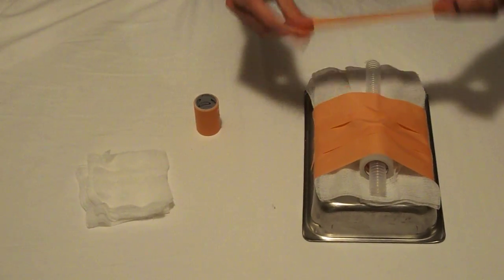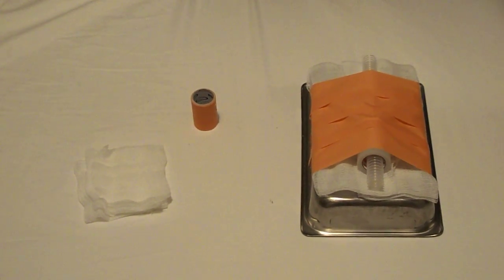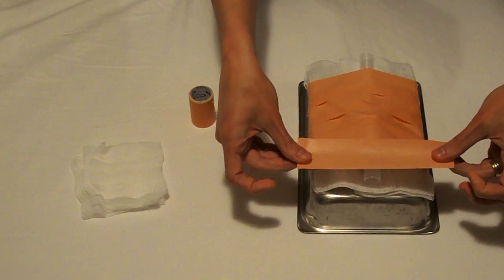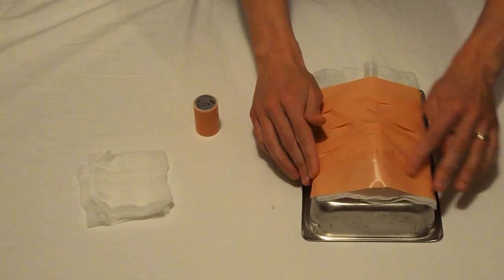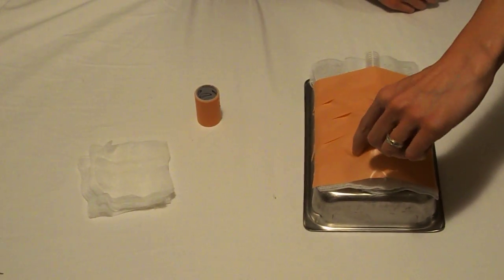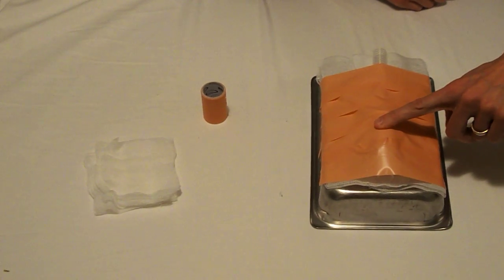It's not necessary to completely cover up the entire trainer as you can imagine but you just want to cover up the cricoid and thyroid cartilages and then now you can feel your thyroid cartilage here and your cricoid cartilage and feel your cricothyroid membrane.